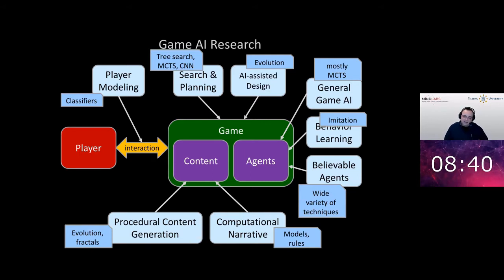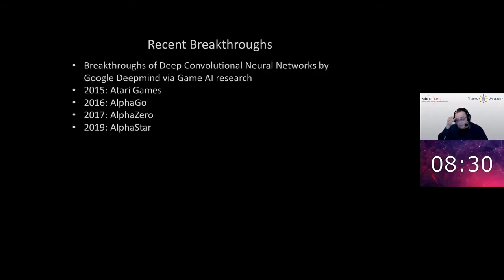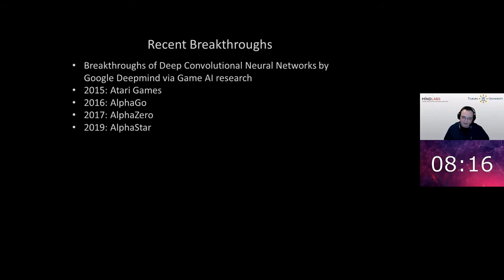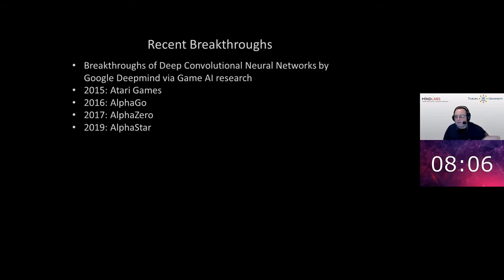In recent years, deep convolutional neural networks got a lot of attention in game research, mainly because of Google DeepMind, which published quite a lot of work since 2015 on the use of convolutional neural networks in games. I want to quickly go through these and give a bit of criticism, or at least some remarks on them.